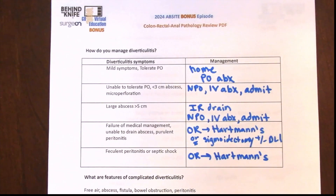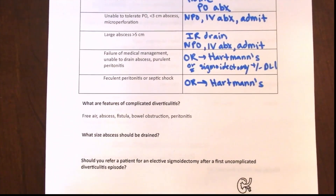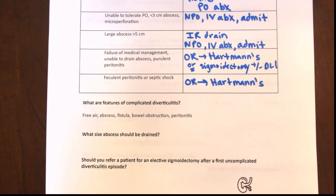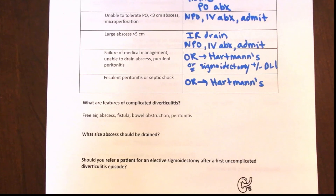Complicated diverticulitis includes anything beyond simple diverticular inflammation: free air on imaging, abscess, fistula, bowel obstruction, peritonitis, or hypotension. For abscess seen on imaging, call IR for drainage if over 3 to 5 cm (institution dependent).